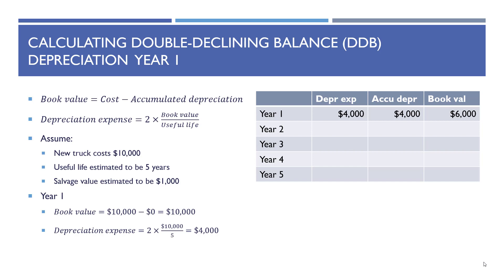In year one, book value is $10,000 minus zero, or $10,000. Depreciation expense would be two times $10,000 divided by five, giving you $4,000. So depreciation expense in year one is $4,000, accumulated depreciation is $4,000, and book value is $6,000. Notice that this is much more than the $1,800 we had under straight line.